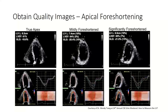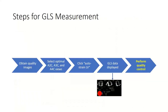The next part of obtaining quality images is avoiding foreshortening. When we image the true apex, we obtain a GLS of 18.6. But if we start to foreshorten — either mildly or significantly — we will start bumping up our GLS to above normal in a patient who actually has potentially abnormal GLS. So if you are going to perform GLS, just make sure you review for apical foreshortening.